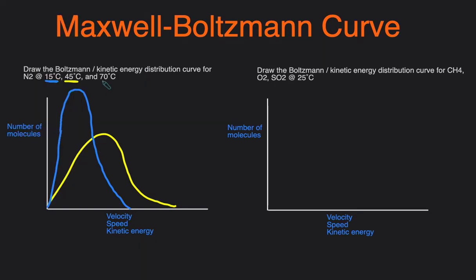At 70°C, that's an increase in temperature, so the molecules will have more energy and be moving more quickly, so the graph will be shifted to the right. But if it's shifted to the right, it will have to be flatter, because we again have to keep the area under the curve the same.